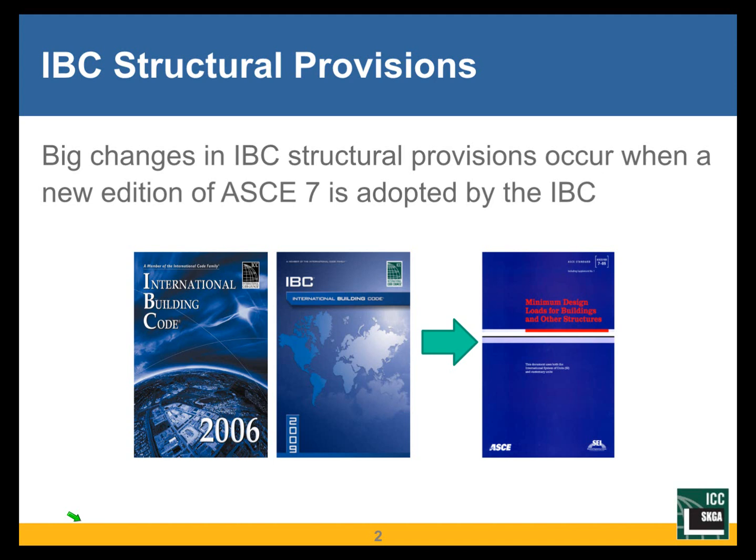And the materials chapters 19 through 23 are by reference to material standards. Chapter 19 on concrete, for instance, uses ACI 318. That being the case, we have significant changes in the structural provisions of the code only when the referenced ASCE 7 edition changes.